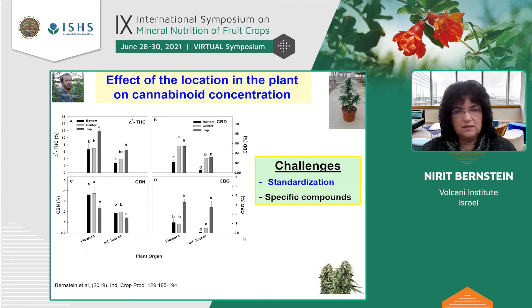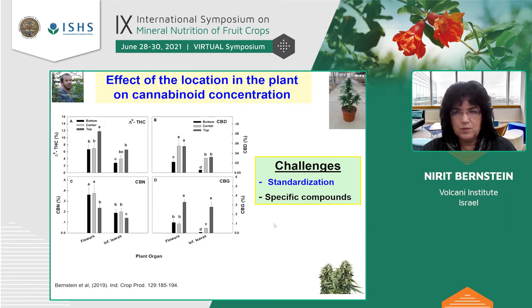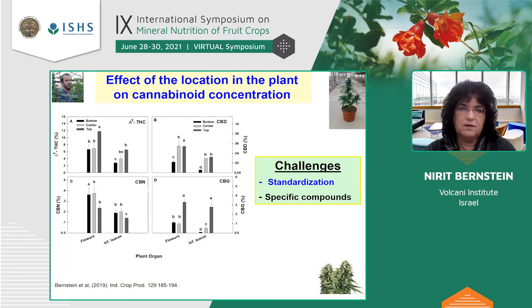One of the first things we did, about six years ago with Soraya Proch, a master's student in the lab at the time, was to look at two cannabinoids — THC and CBD — and we looked at their concentration from the bottom, center, and top of the plant inflorescences. We sometimes see even two to three times changes in concentration, which is highly unacceptable for plant material being supplied to patients — it's analogous to prescribing three pills instead of one in conventional medicine.